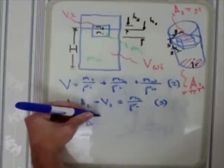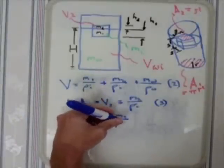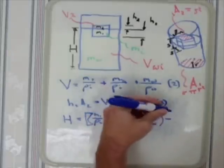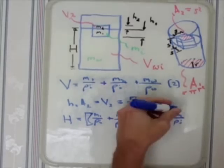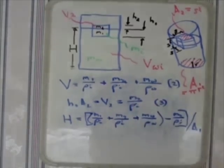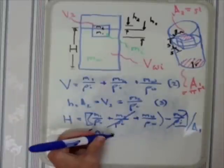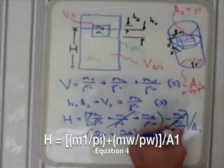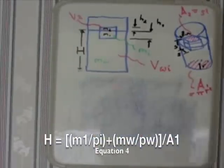Now we can plug that right back into equation one and with a little bit of work and some canceling out we come up with equation four which is the basis of our model and that is H equals M1 over the density of ice plus MW over the density of water all over A1. That's our equation four.